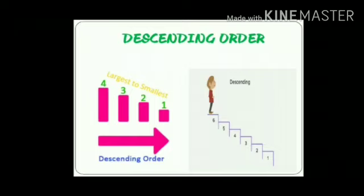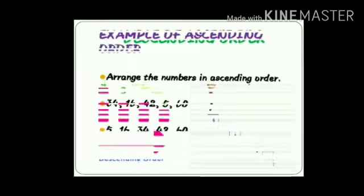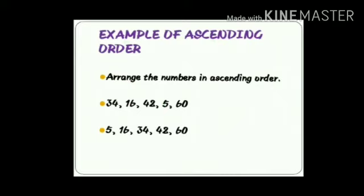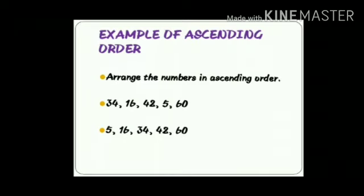Okay children, now we will see an example of ascending order. Arrange the numbers in ascending order. The question is: 34, 16, 42, 5, and 60. Five numbers are given. We have to arrange these five numbers in ascending order — ascending means starting from small to big. The smallest number will be 5, so in the answer, 5 is written first.